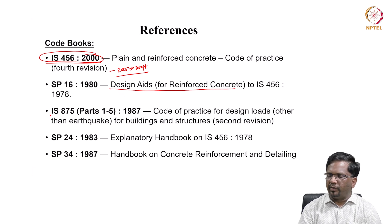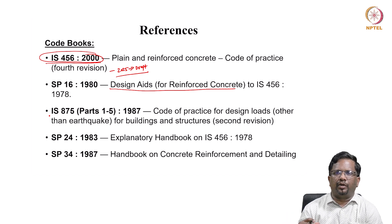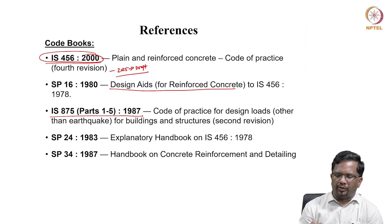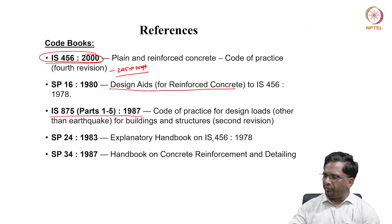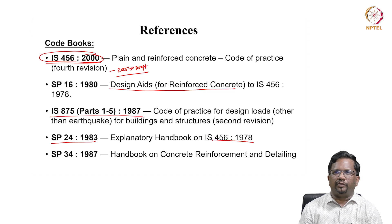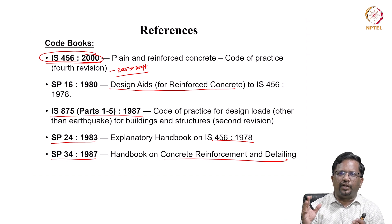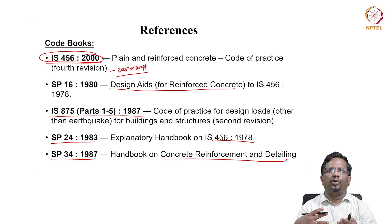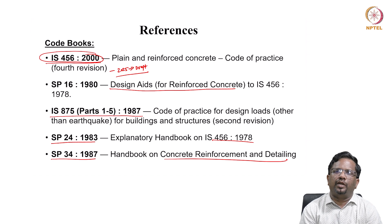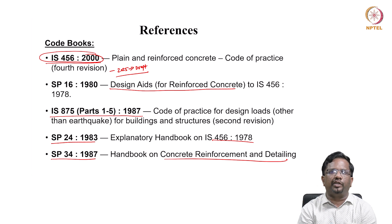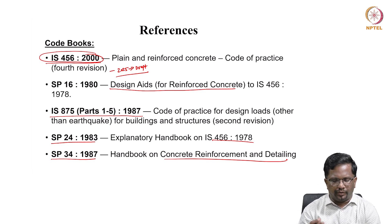For loads, the design load should be as per the standard. We use IS 875, which has 5 parts depending on the type of load. IS 456 explanations come from SP24, the explanatory handbook, and SP34 covers detailing aspects. In reinforced concrete, detailing — how you arrange the bars and ensure they are properly connected, especially in critical regions like joints — is just as important as determining the amount of reinforcement.